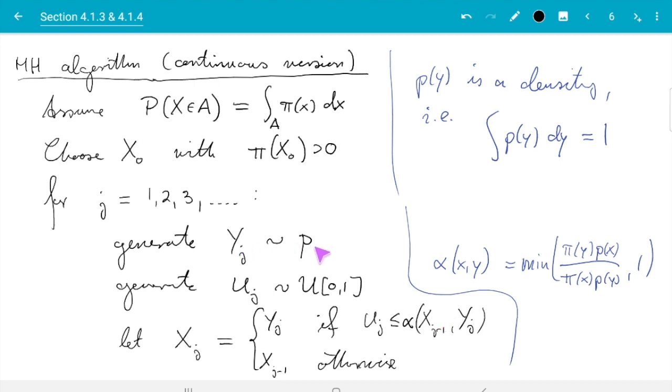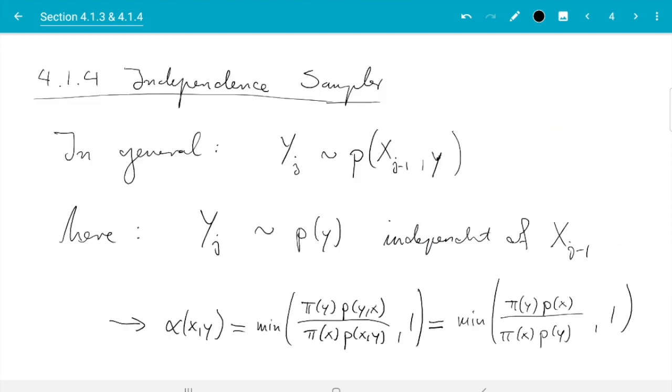This is somewhere between general Metropolis-Hastings, where even the proposal is allowed to depend on the previous state, and rejection sampling, where we look at each sample individually. This method is called independent sampling.